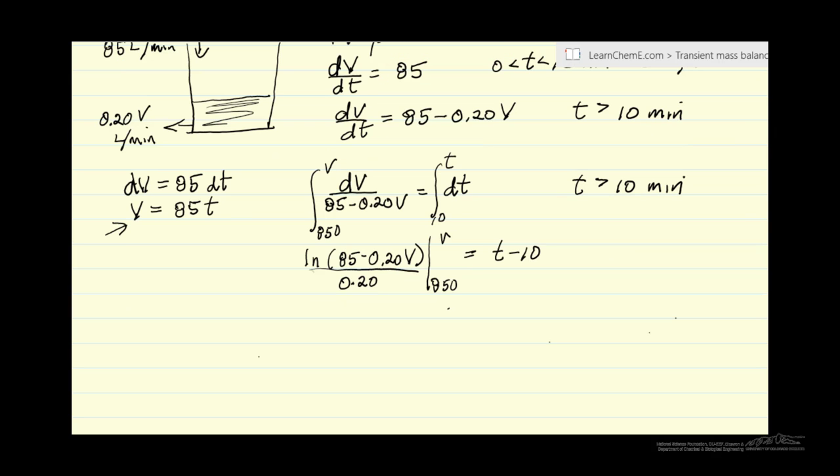Now I can substitute in the limits. I'm going to bring the minus 0.2 to the right side and substitute in the limits. So, ln(85 - 0.20V) - ln(85 - 0.20×850) equals minus 0.20(t - 10). I'm going to multiply some of these terms out and simplify a little bit.